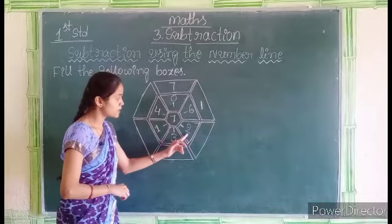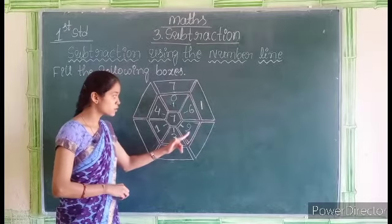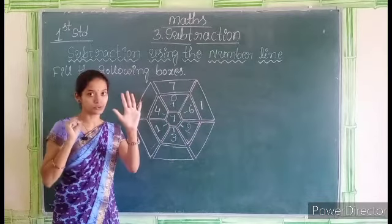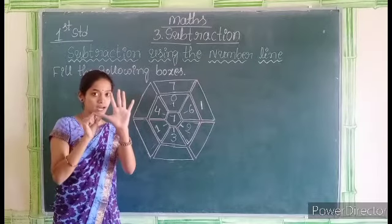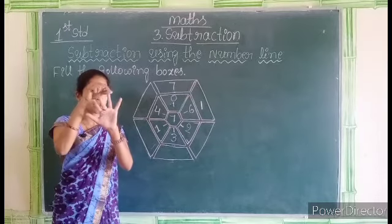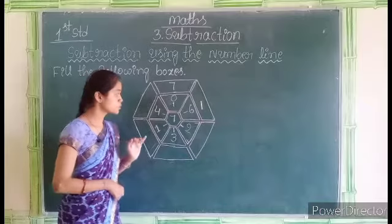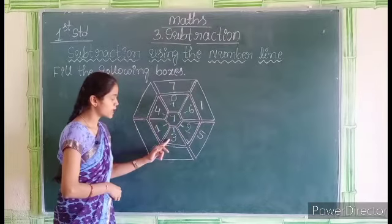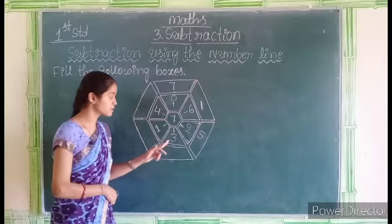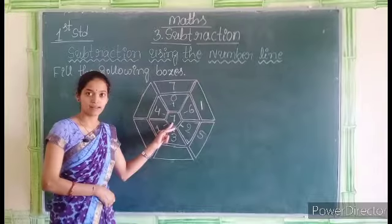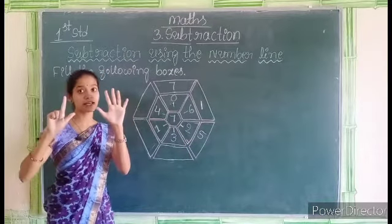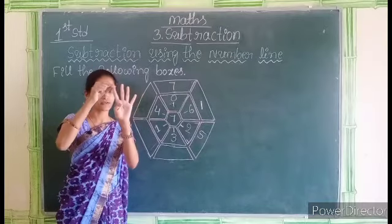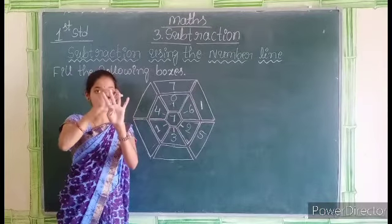Then 7 minus 2: we have to subtract 2 from 7. 7, remove 1, 2. How many fingers left? 1, 2, 3, 4, 5. So 7 minus 2 is 5. Then 7 minus 3: we have to subtract 3 from 7. 7, remove 1, 2, 3. How many fingers left? Let's count: 1, 2, 3, 4.